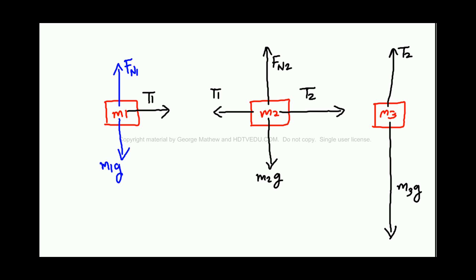That gives us three equations. Now if you look at mass M1, net force along the vertical is equal to 0. So what can you say? Net force along the vertical is equal to 0. That means Fn1 equals M1g. So net force along the horizontal equals M1a. This is your x and this is your y. Net force along the horizontal equals M1a. That means T1 equals M1a.